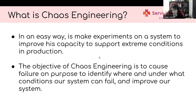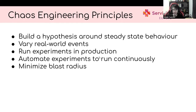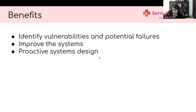What is chaos engineering? It's making experiments in a system to improve risk capacity to support extreme conditions in production. The objective of chaos engineering is to cause failure on purpose, to identify where and under what conditions our system can fail, and improve our system. Chaos engineering is based on five principles: build a hypothesis around steady state behavior, vary real-world events, run experiments in production, automate these experiments to run continuously, and minimize the blast radius. Some benefits of chaos engineering: identify vulnerabilities and potential failures, improve our systems, and have a proactive system design.